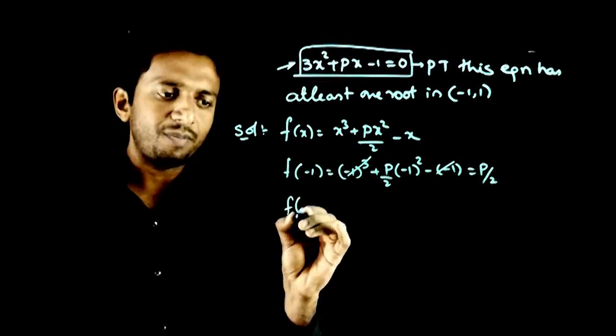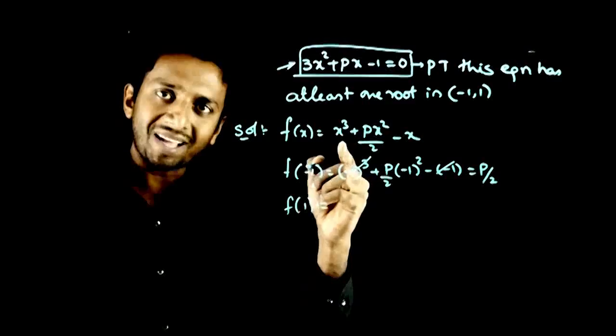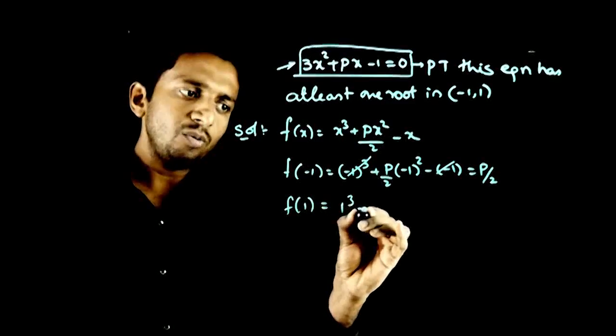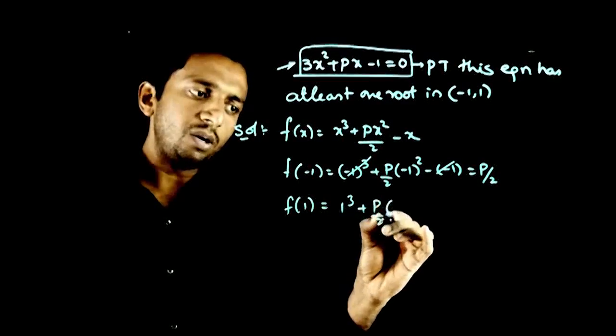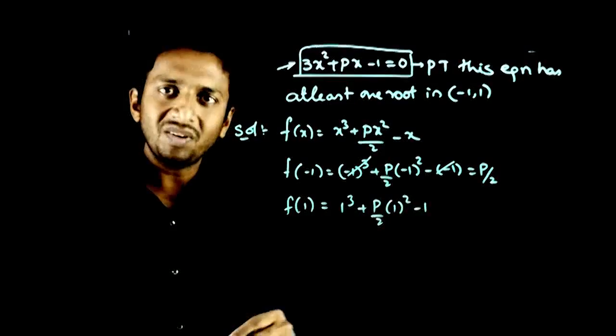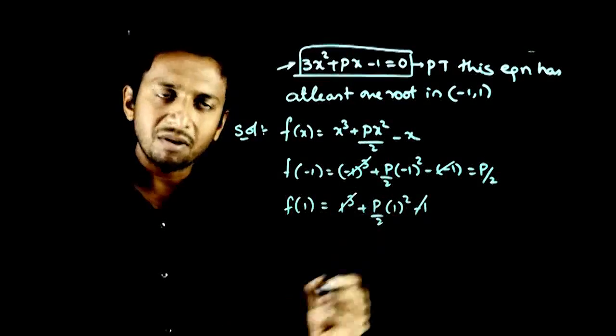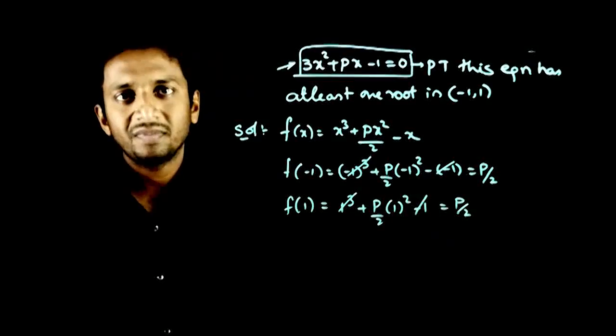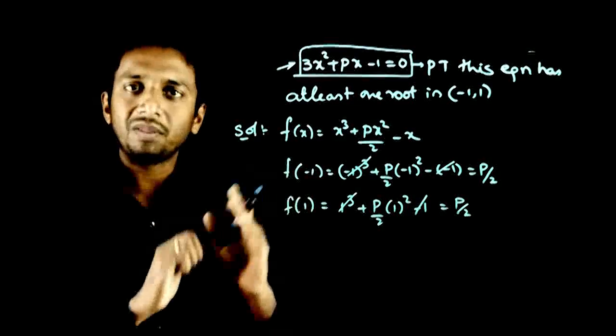What is f(+1)? f(+1) is nothing but, putting 1 in place of x: 1³ + (p/2)×1² - 1. Again, 1 and -1 cancel, this is the same as p/2. f(-1) and f(1) are the same.